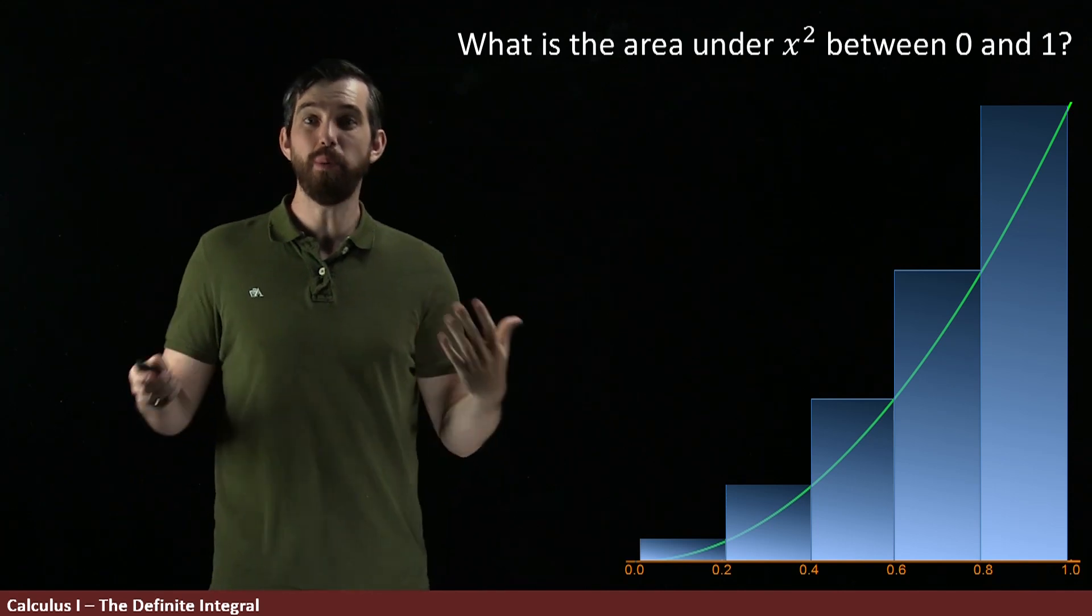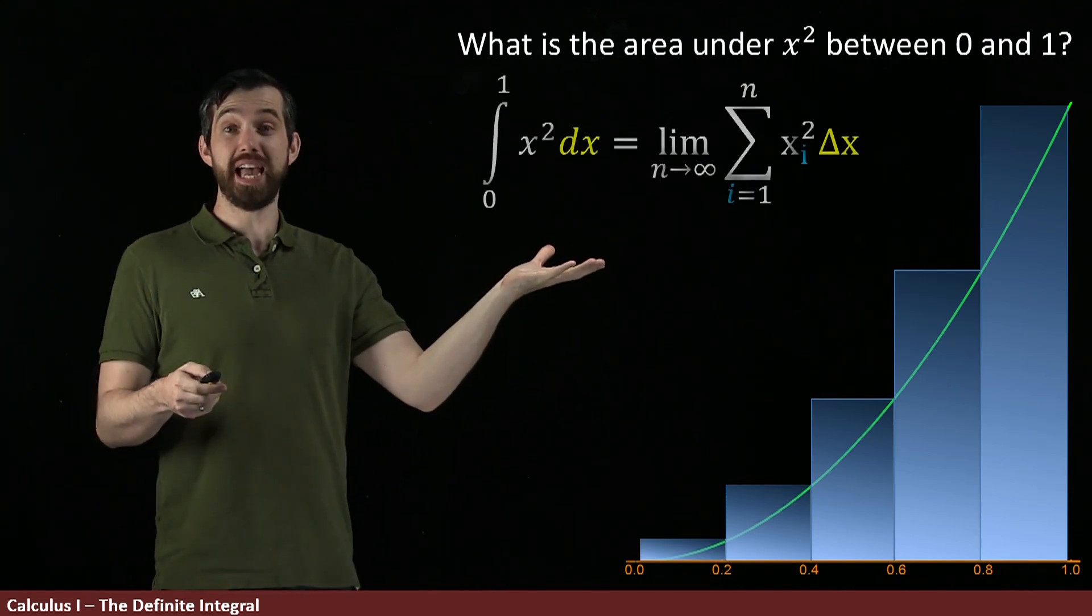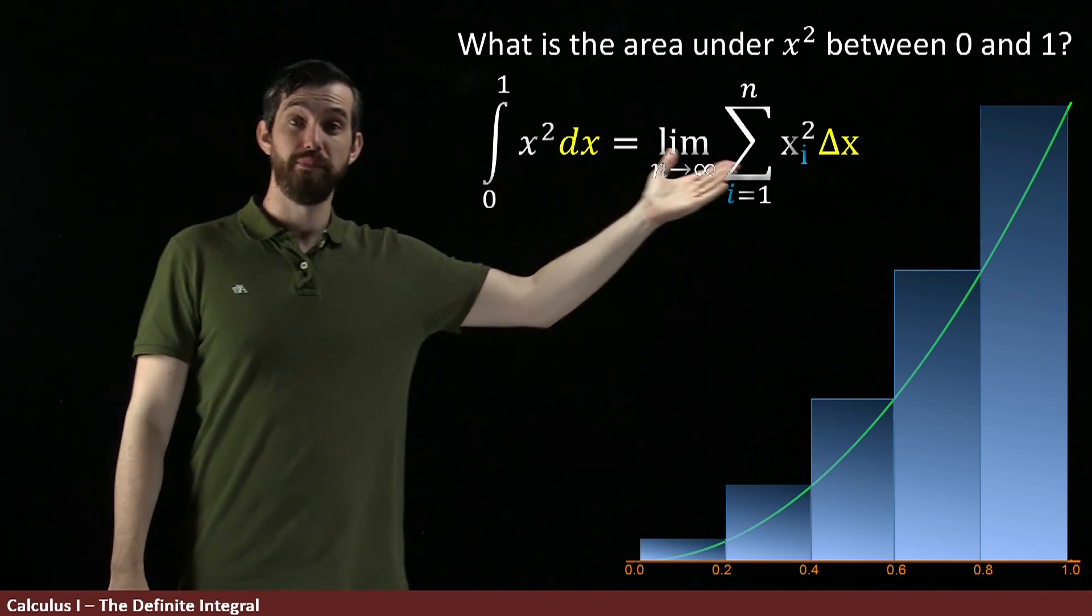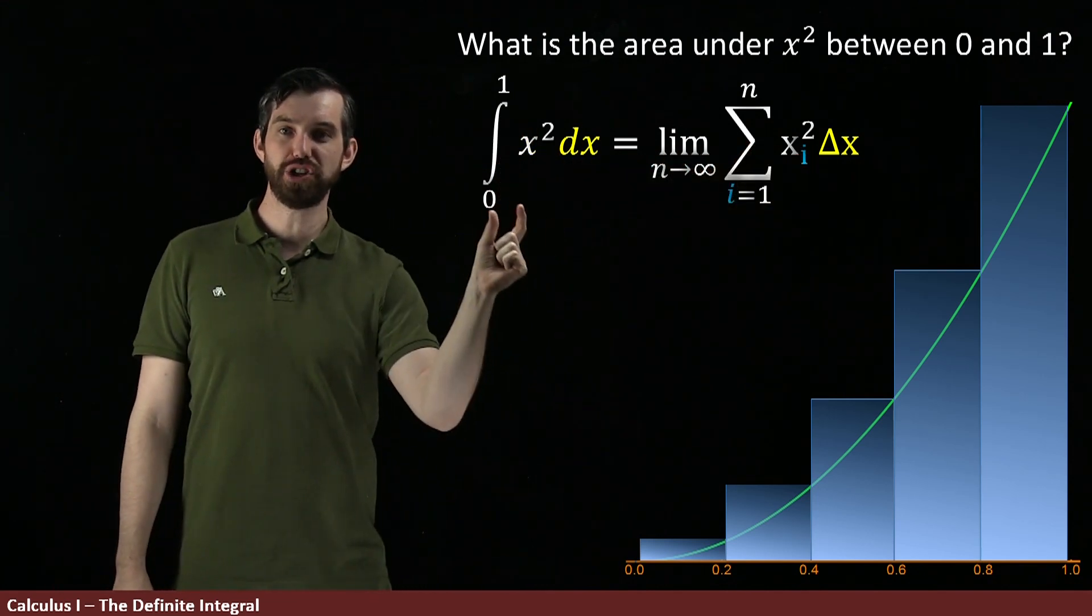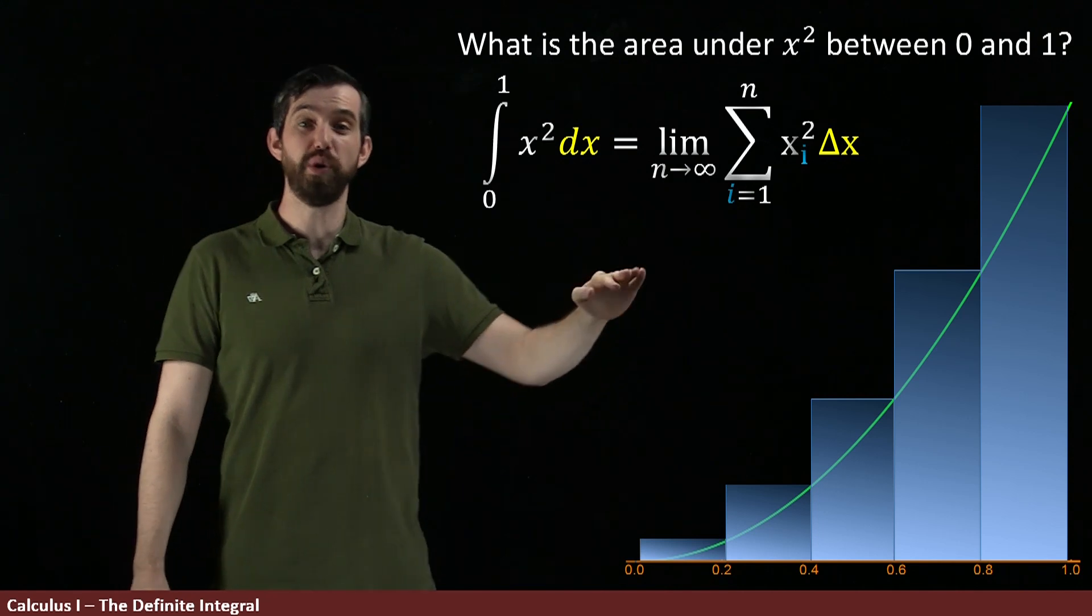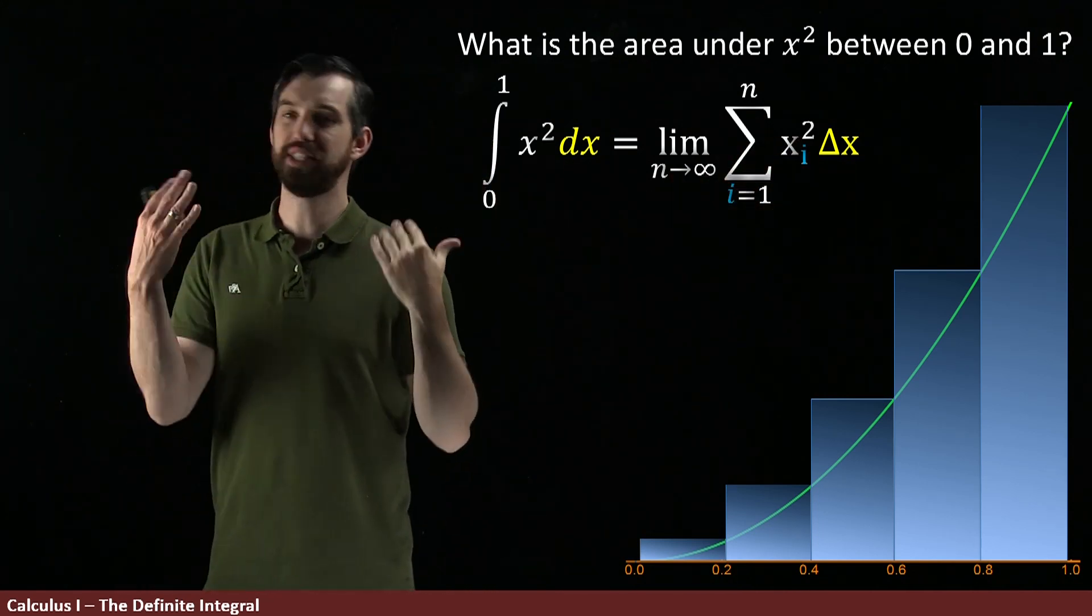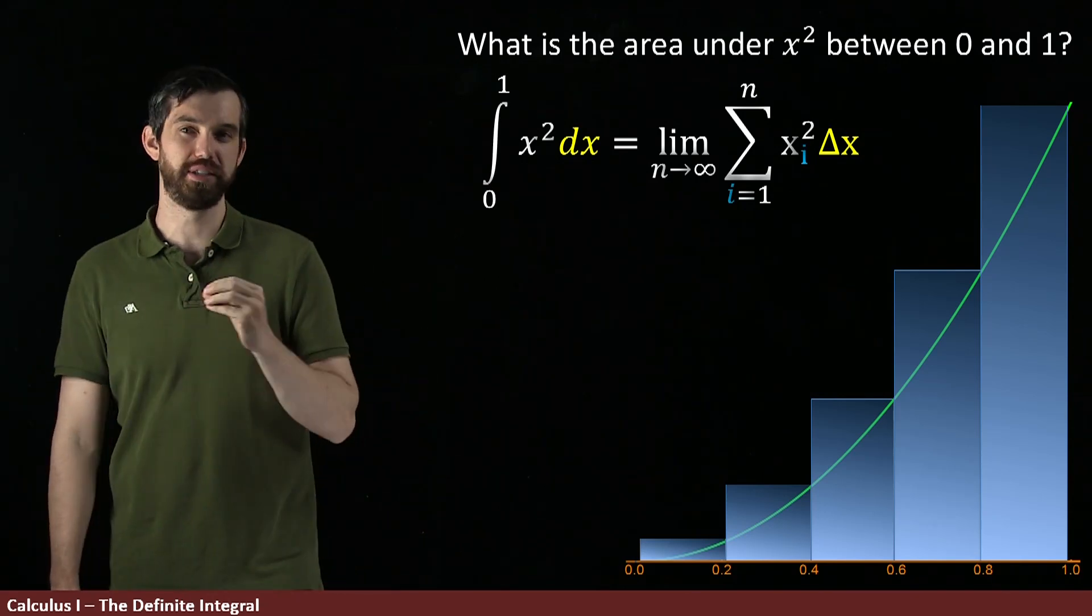So I'm going to remind you that what we're doing, in a different way of presenting it, is a definite integral: the integral from 0 to 1, that's where I'm going between, of the function x squared dx. And it's going to be written down as this computation we've done before, the limit as n goes to infinity of the sum of some xi squared's delta x.